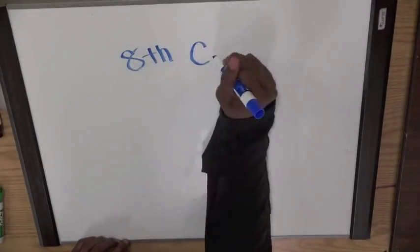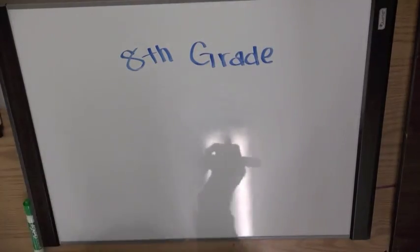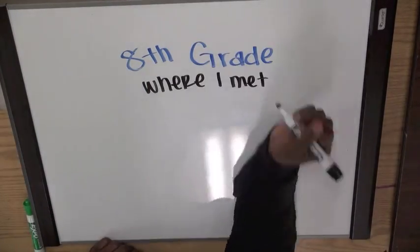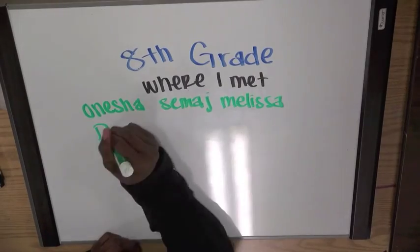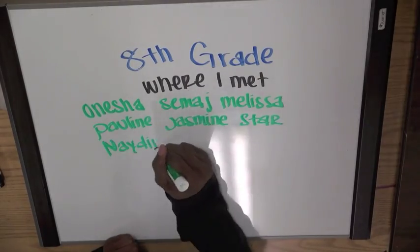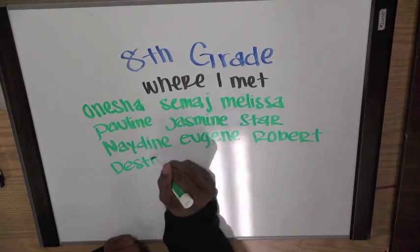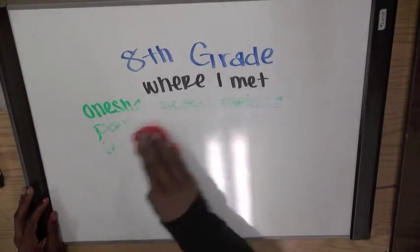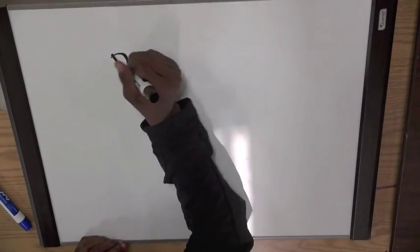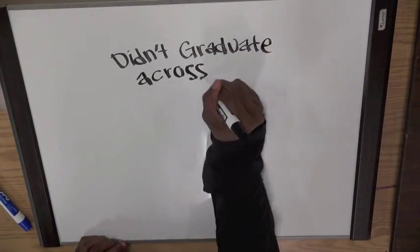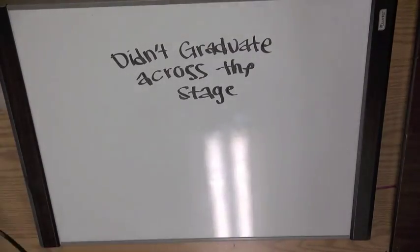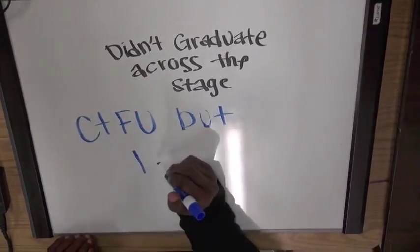I got kicked out again in seventh grade because of the drumming jeans. In eighth grade I went to Visitation Valley Middle School and I met all these people at school. We're all close, except Eugene and Robert. I didn't graduate across the stage, but I don't care because I didn't even like that school anyway. Nobody even did anything when I got bullied.